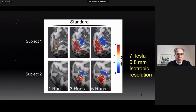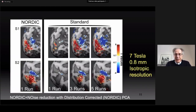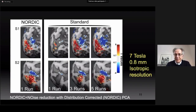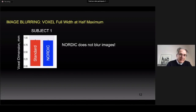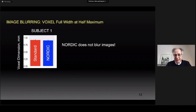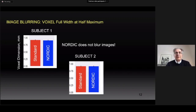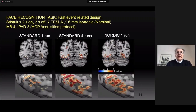With the image reconstruction and denoising method we introduced recently, which we call NORDIC, you can actually achieve the same kind of image that you see in three to five runs in a single run of NORDIC reconstruction. Most importantly, this is accomplished without image blurring. I show the voxel full width at half maximum before — with standard reconstruction without NORDIC — and after NORDIC reconstruction. NORDIC does not blur images.